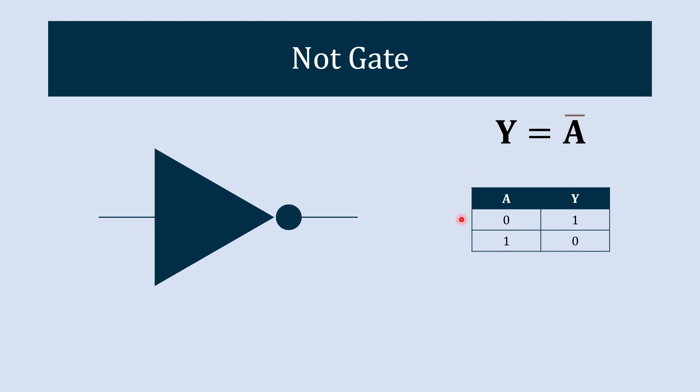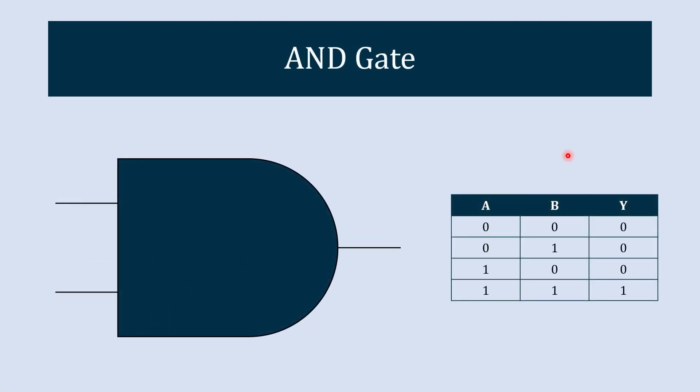So from that understanding, this truth table is clear to everyone. And as per this truth table we can write that the output y is nothing but the a bar. So y is equal to a bar. The next gate we are going to understand is the AND gate.